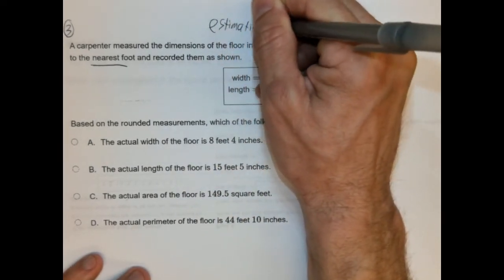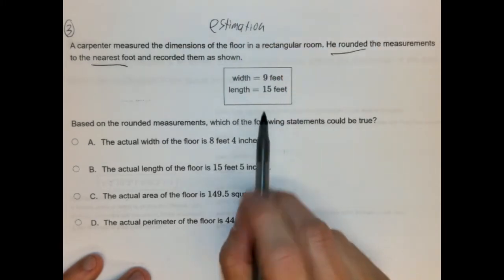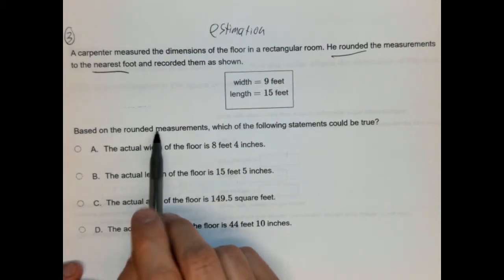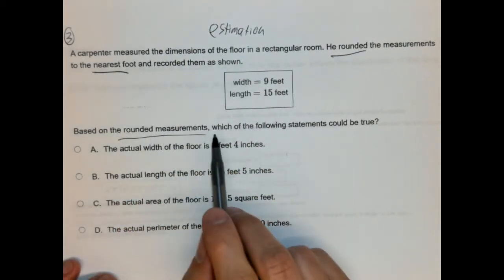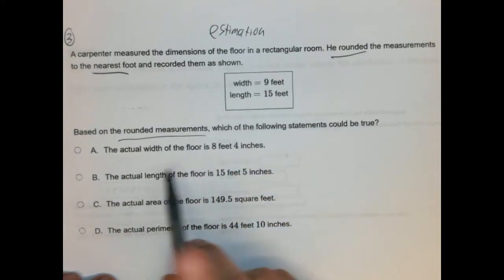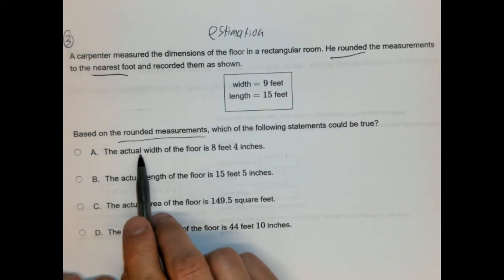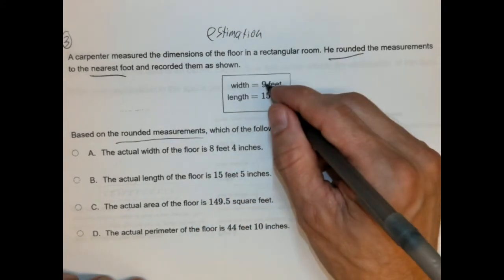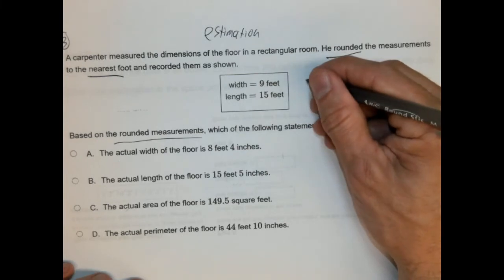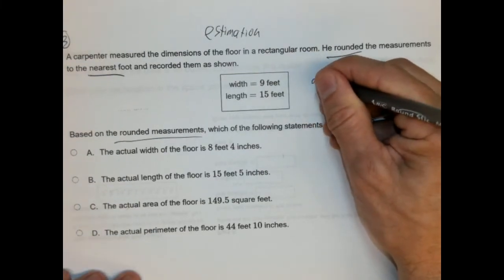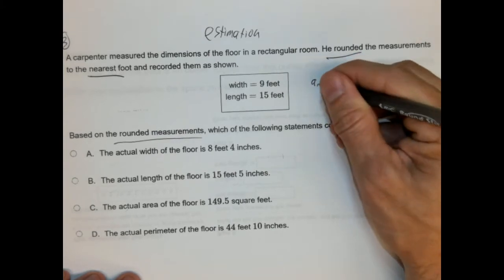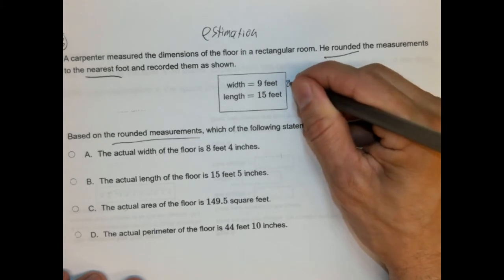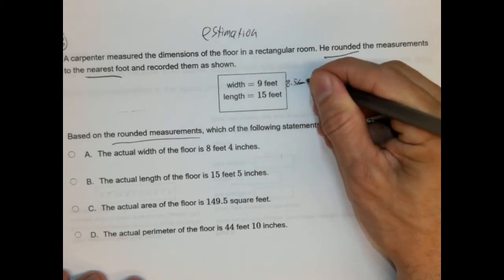So, it's an estimation problem. We had one of those at the end of session one. So, the width is estimated to be nine feet. The length is estimated to be 15 feet. Based on the rounded measurements, again, I want us to make sure we know that, which of the following statements could be true. So, three of these are false. One of these could be true. The actual width of the floor is eight feet and four inches. So, is that large enough? Well, we know the width, if we're going to round it, it could be as high as nine point four nine, or as small as eight point five or eight and five tenths. So, it could be between those two values.